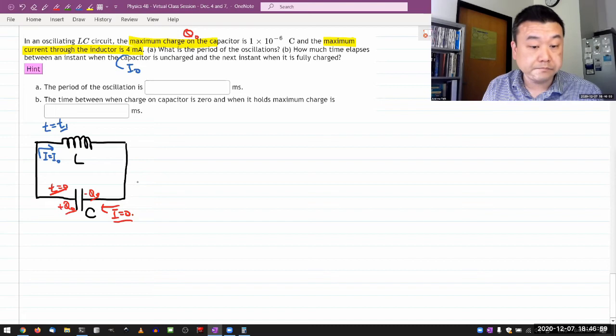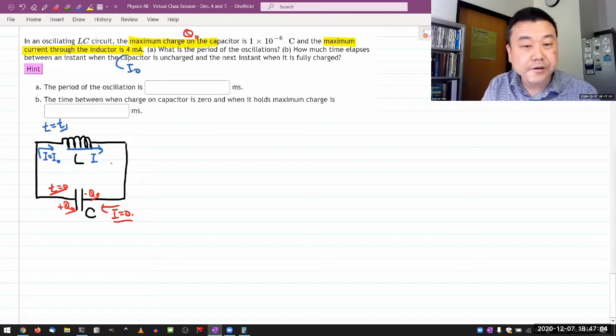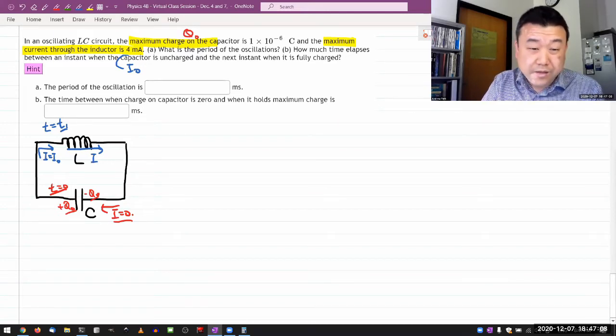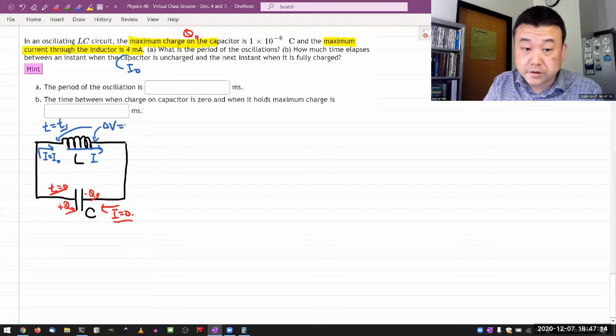And I guess that's just a thing. That's the current flowing through the inductor. And I guess if I had to say something, when you have a maximum current flowing through the inductor, the voltage difference across the inductor is going to be zero.